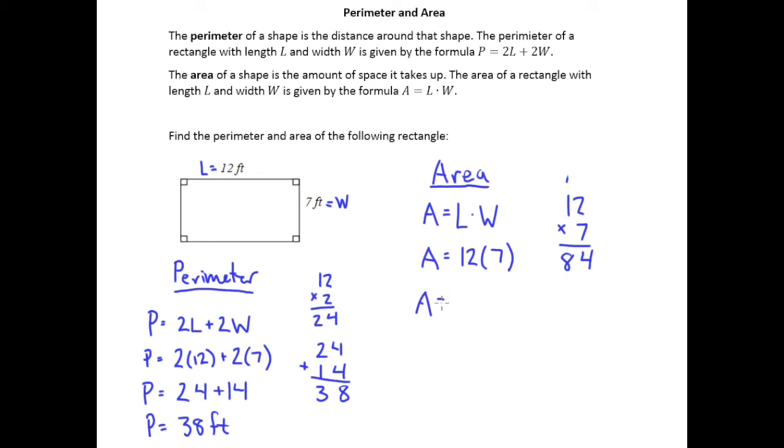Now the way you label area is not in feet. We're going to say this is 84 square feet. Or we could also say 84, as an abbreviation, feet with a little square symbol there. So both those mean the same thing, square feet.